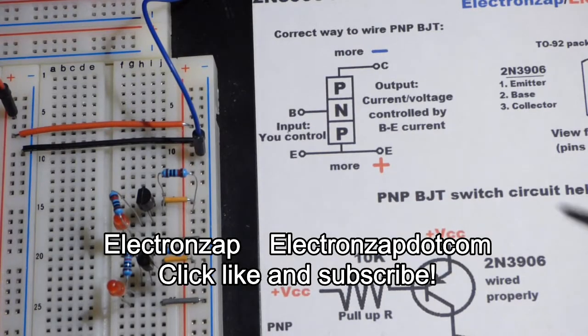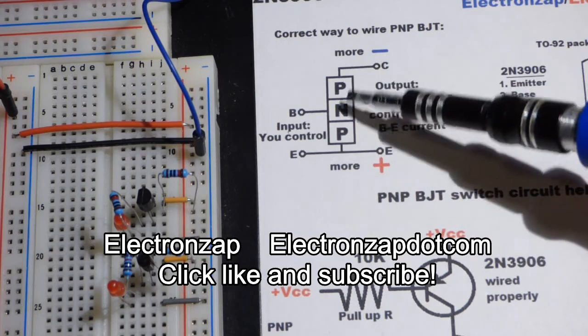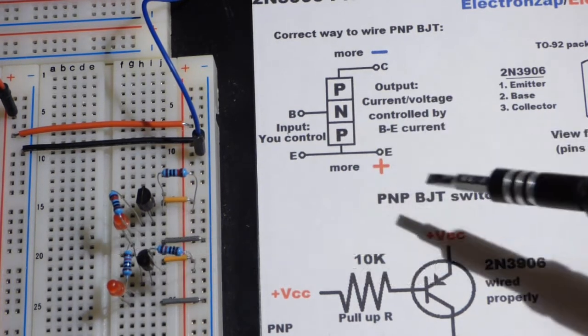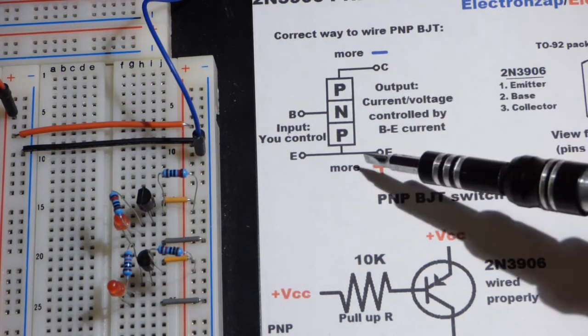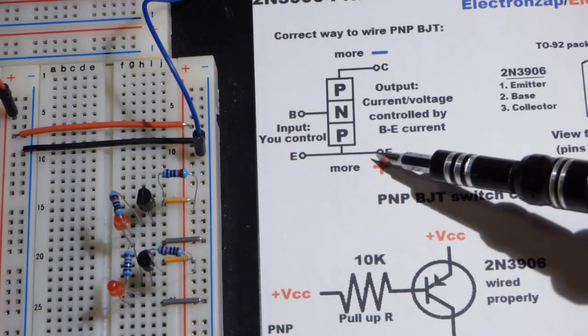So now in this video, we're going to look at one of the problems with wiring a PNP bipolar junction transistor backwards. And what I mean is that normally we want the collector more negative than the emitter. That is how it is designed to be used.